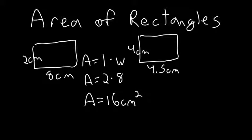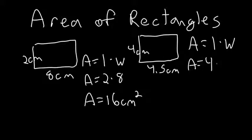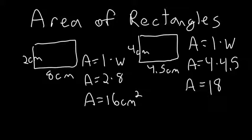The next one is 4 centimeters by 4 and a half centimeters. Area equals length times width, so area equals 4 times 4 and 5 tenths, which gives us an area of 18 centimeters squared.